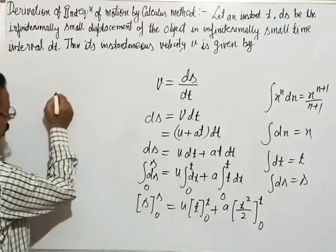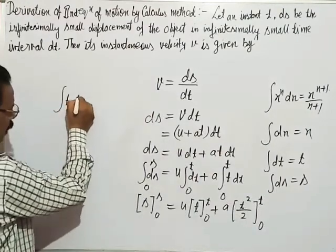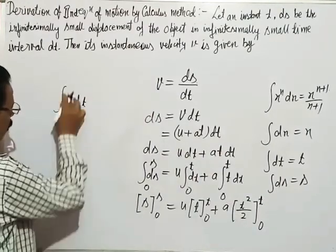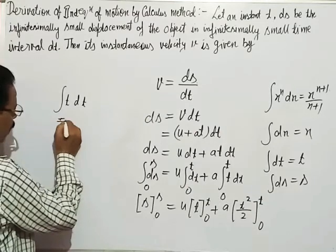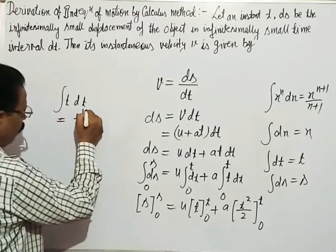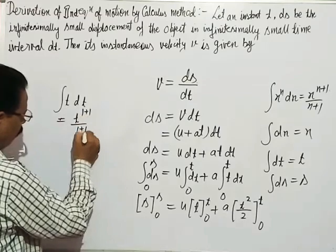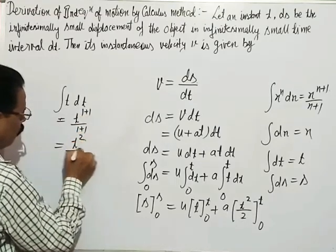So the integration of t dt gives us: t to the power 1 becomes t to the power (1+1) upon (1+1), which equals t²/2.